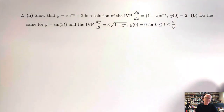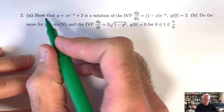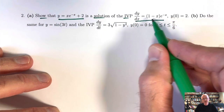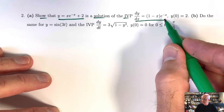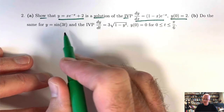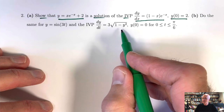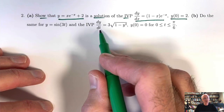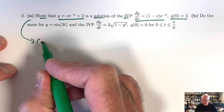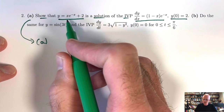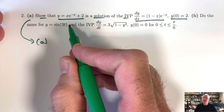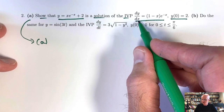Problem 2 is somewhat similar to problem 1 but with some twists. In part A, we are to show that a given function of x is a solution of the initial value problem: dy/dx = (1 - x)e^(-x), with initial condition y(0) = 2. In part B, we do something similar for a function involving sine. Notice in part B the right-hand side depends on the dependent variable y, not the independent variable t, so it's a little trickier.